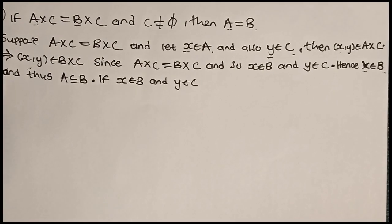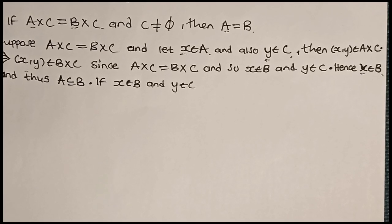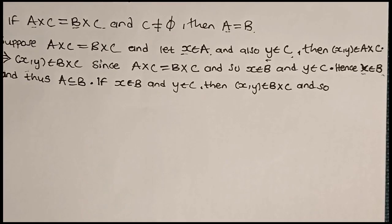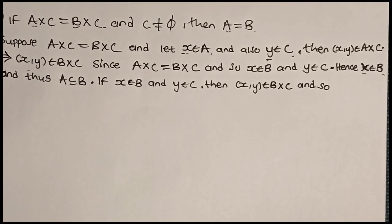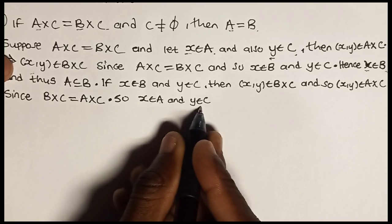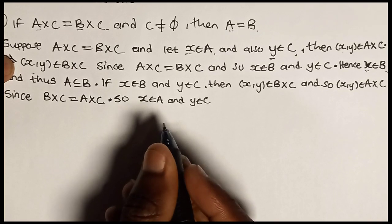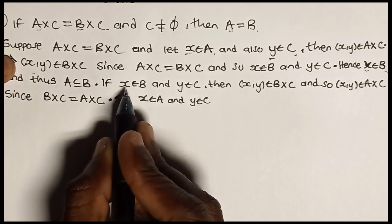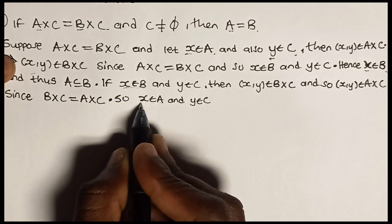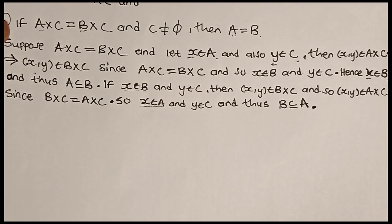Similarly, if X is an element of B and Y is an element of C, then the pair (X, Y) is an element of B cross C. Since B cross C is the same as A cross C, the pair (X, Y) will be in A cross C. So X is an element of A and Y is an element of C, and therefore B is a subset of A, since X an element of B implies X an element of A. This concludes the proof: A equals B.